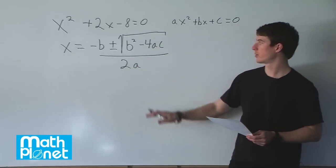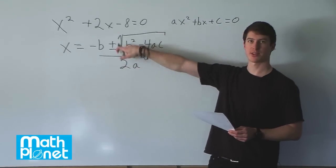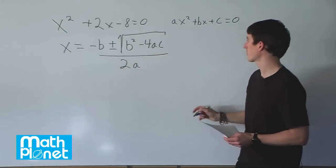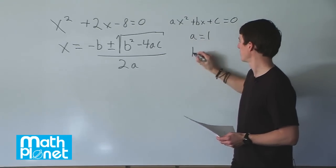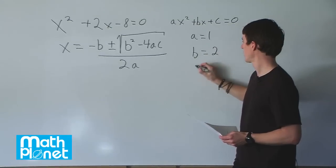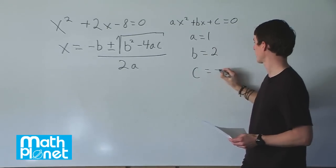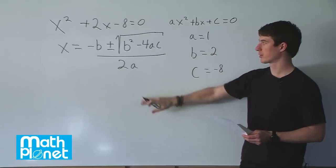So now what we need to do is just plug in these values of a, b, and c here and find our two values for x. So we have a is equal to 1, b is equal to 2, and c is equal to negative 8. So we take these, plug it in here, and see what we get.